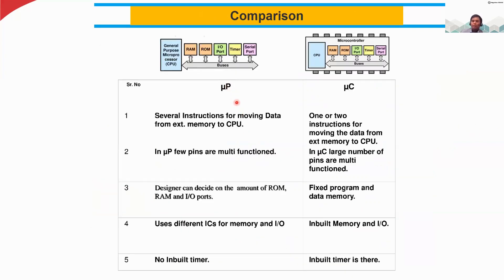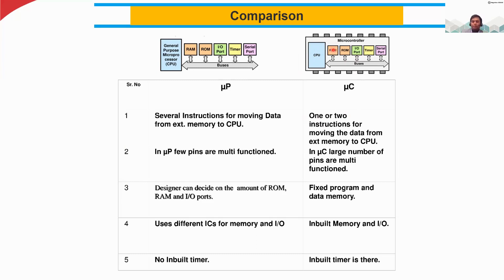Now let's compare microprocessors and microcontrollers from a technical perspective. In a microprocessor, you need several instructions to move data from external memory to the CPU because the memory is located outside, which takes more time. But in a microcontroller, just one or two instructions are enough to move data from memory to the CPU because it's all inside the chip, so transmission time is much less.